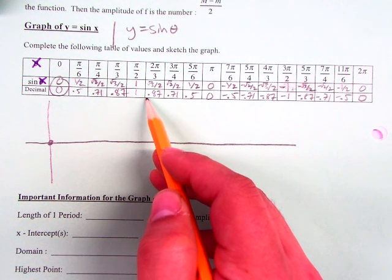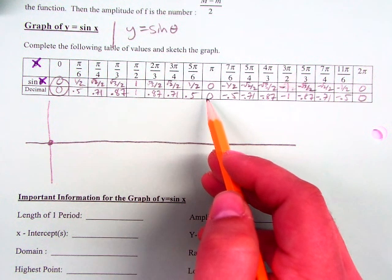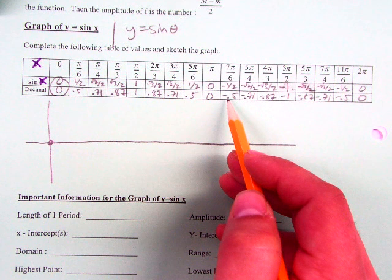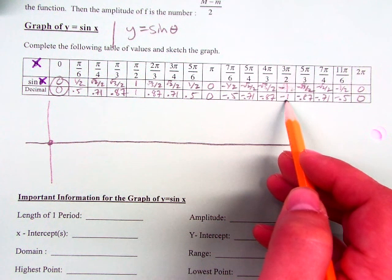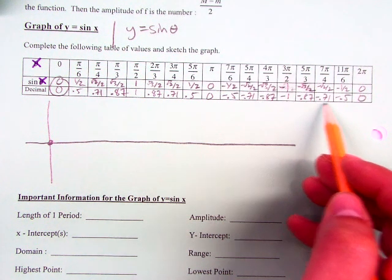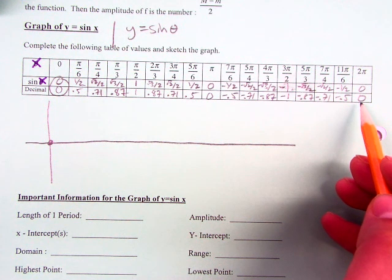It goes back down, hits 0 again, and then after that, it actually dips below the x-axis, goes all the way down to negative 1, and then goes back up and hits 0. Everybody sees that pattern, right?